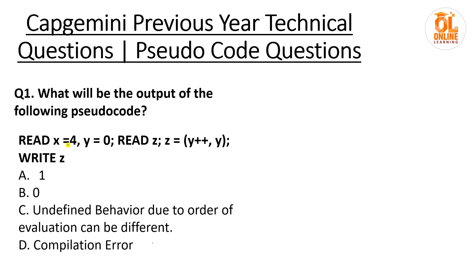Coming to the first question for today. Read x equal to 4, y equal to 0. So x equal to 4 and y equal to 0. Read z, and z equal to y plus-plus comma y.